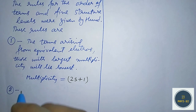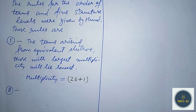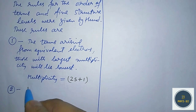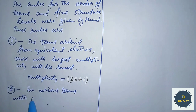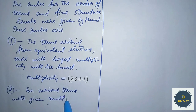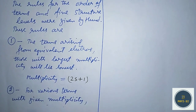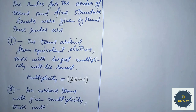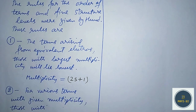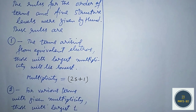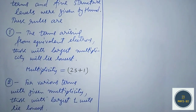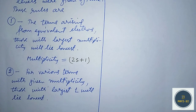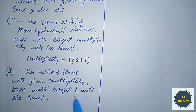The second rule is: for various terms with a given multiplicity, those with the largest L will lie lowest. So if we have some terms which have the same multiplicity, then those with the largest L value should be placed in the lowest energy order.